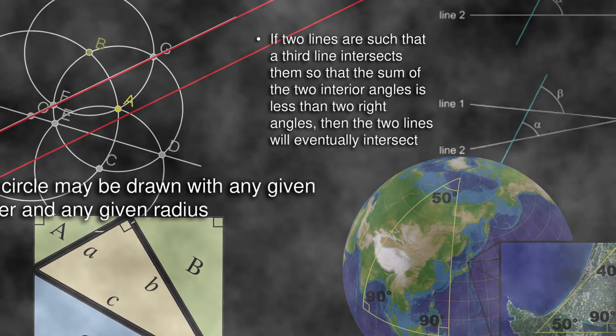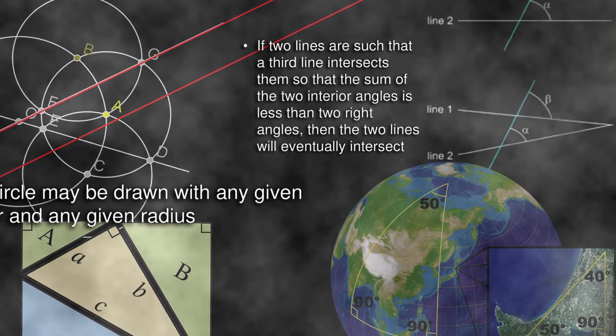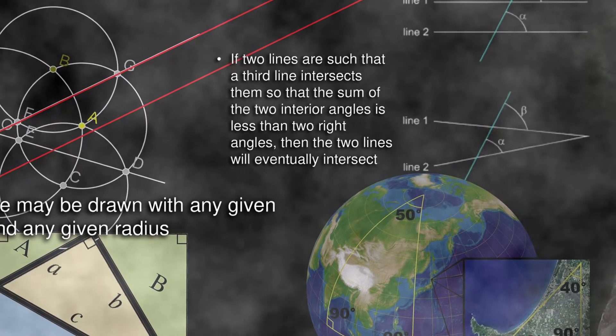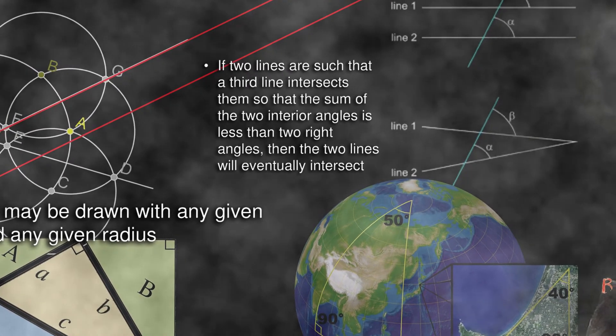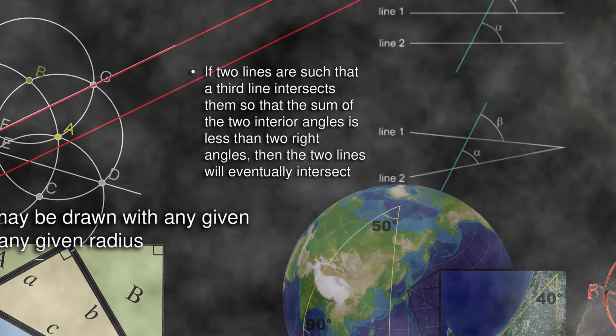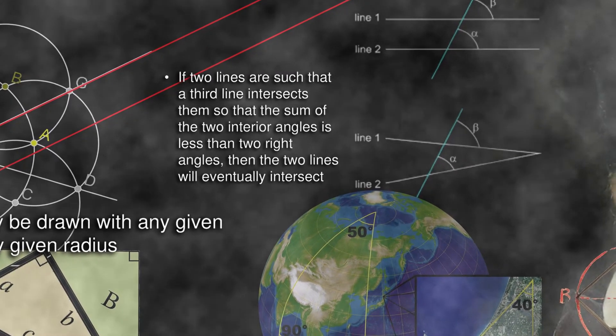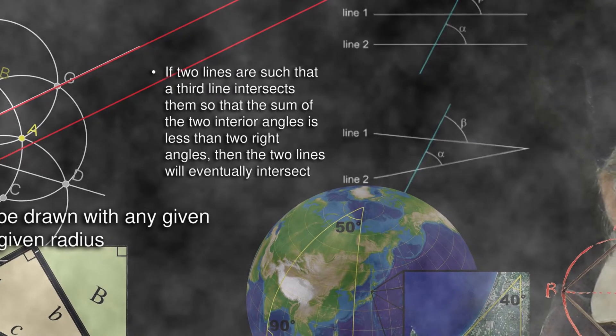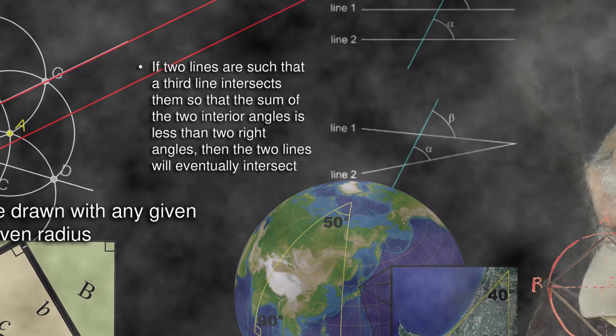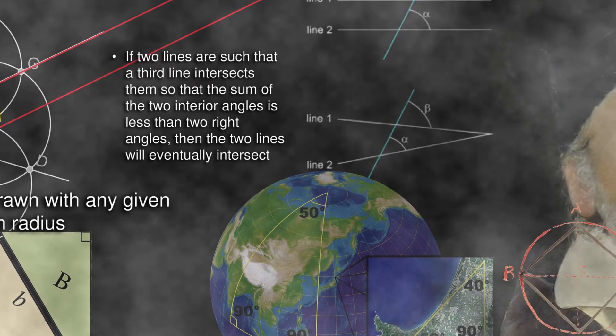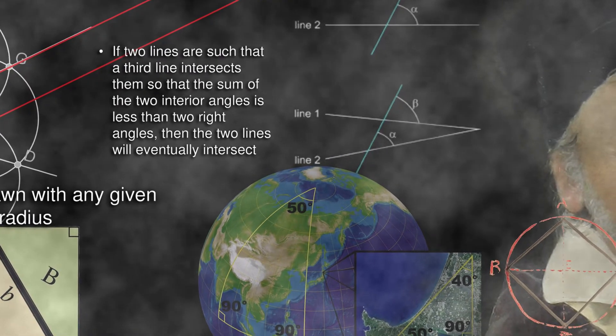Euclid's parallel postulate means that only one line can be drawn parallel to another through a given point. But if space is curved and multidimensional, many other parallel lines can be drawn. Similarly, according to Euclid's geometry, the internal angles of a triangle always add up to 180 degrees. Yet those of a triangle drawn on a ball add up to more than 180.